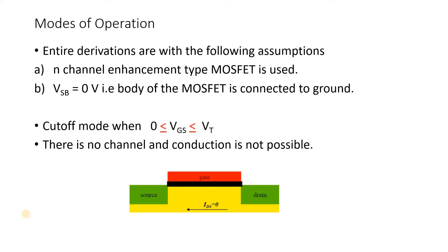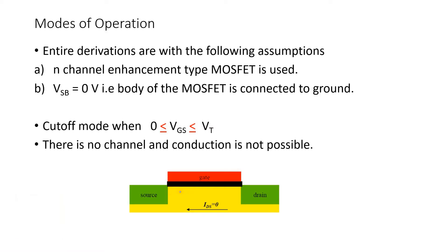The first mode of importance is when your gate potential is between 0 and the threshold voltage of the MOSFET — then your channel is not being created. When there is no creation of channel, there will be no movement of electrons from source to drain. So there is no channel and no conduction. This is called cut-off mode.